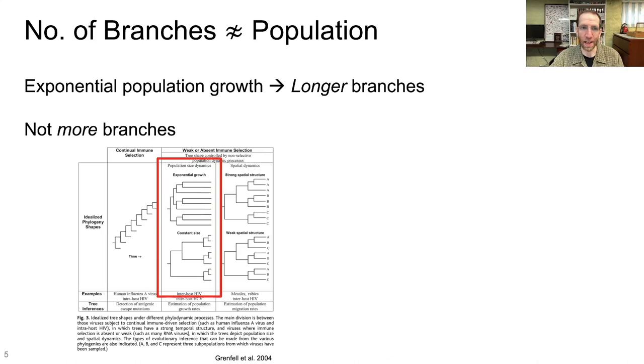Here is an example of this from a 2004 paper where we have, this paper was talking about how a bunch of different parameters affect the topology, the shape of your phylogeny, and if you look in the red box right here, you have a population of constant size, which shows this exponentially increasing branch pattern, and here we have an exponentially growing population that doesn't show more branches, it shows longer branches.